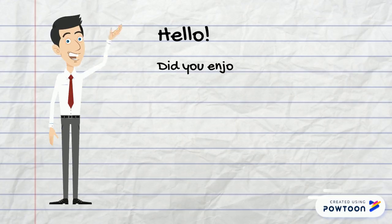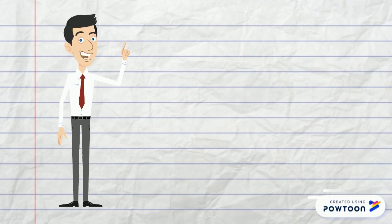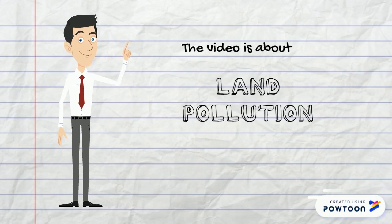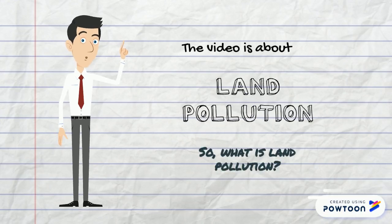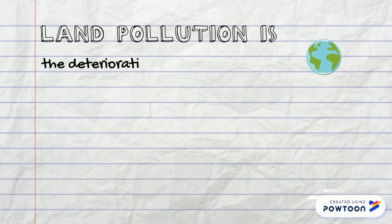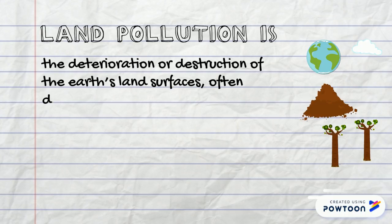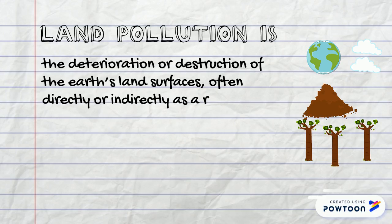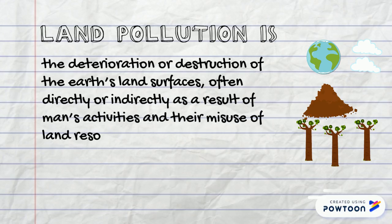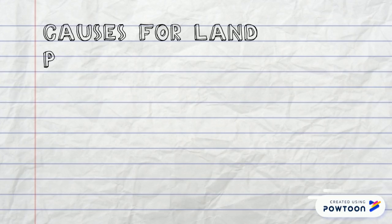Hello. Do you enjoy the previous video? This video is about land pollution. Land pollution is the deterioration or destruction of the earth's land surfaces, often directly or indirectly as a result of man's activities and their misuse of land resources.